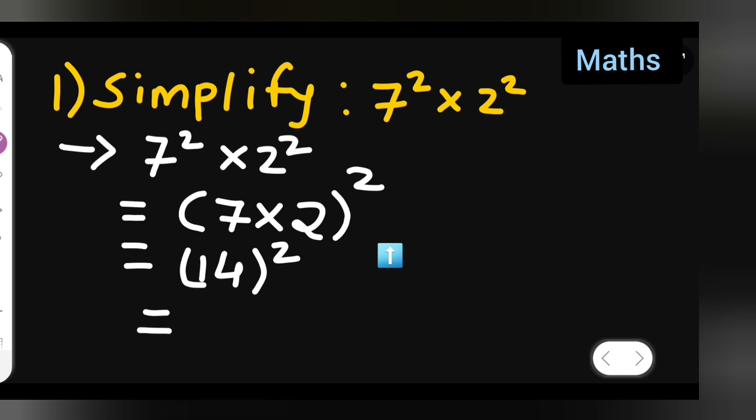So, what will be the answer? 14 square will give you what? 14 multiplied by 14, right? Now, which is equal to? Well, you can multiply and see 14 multiplied by 14. What answer you all are getting?